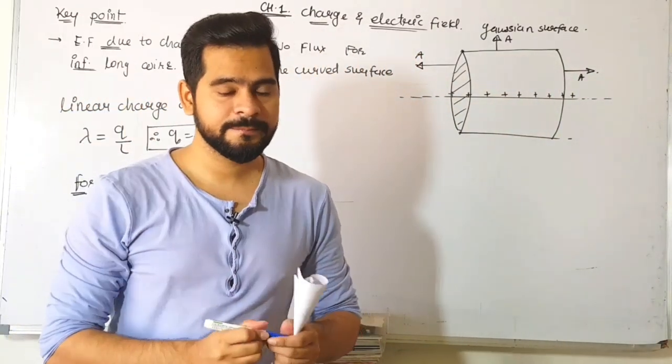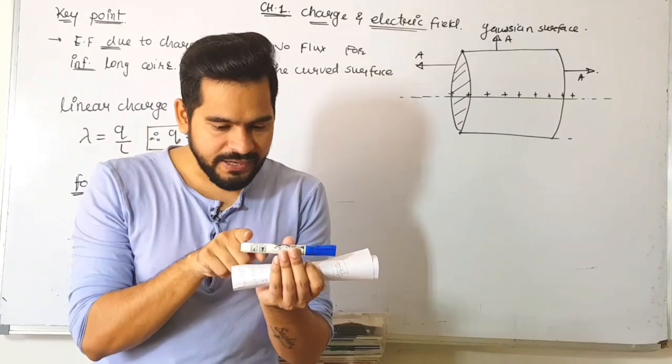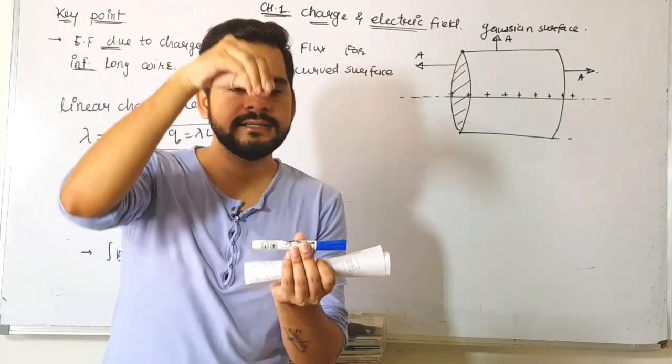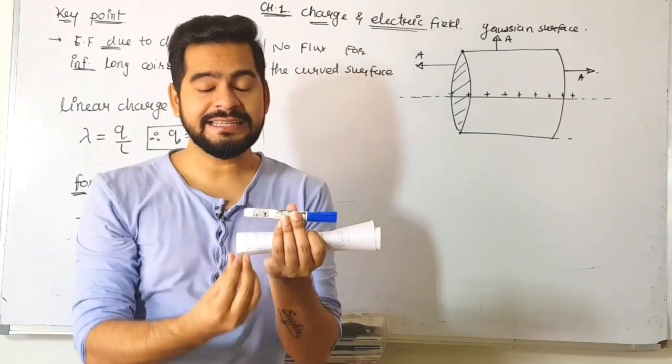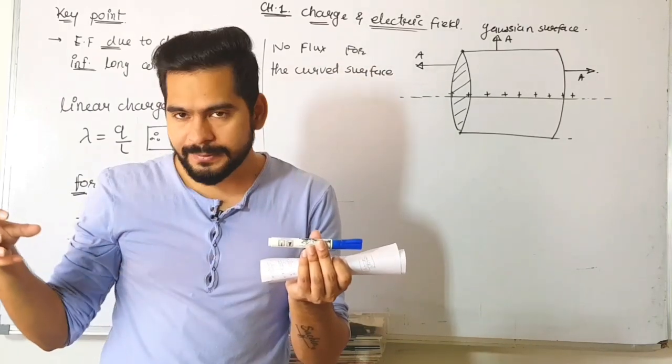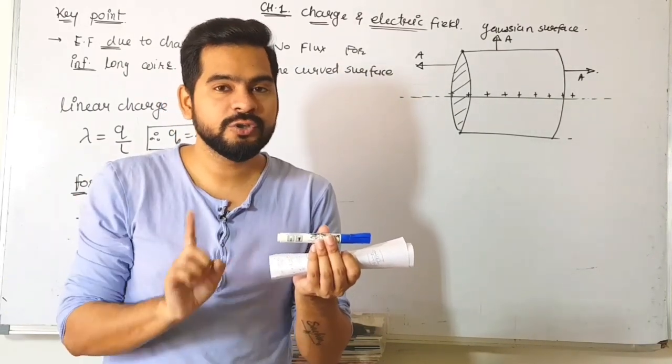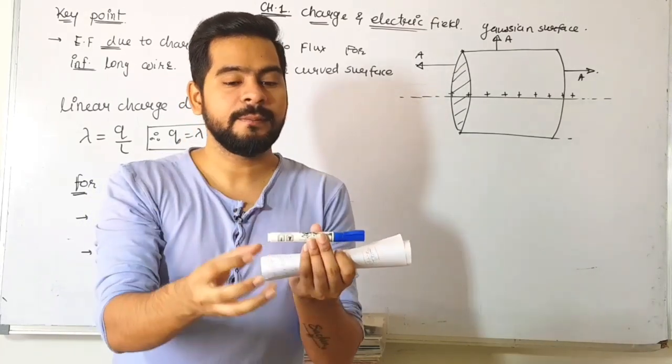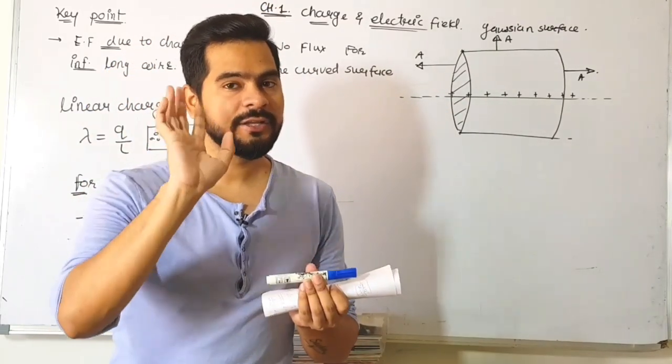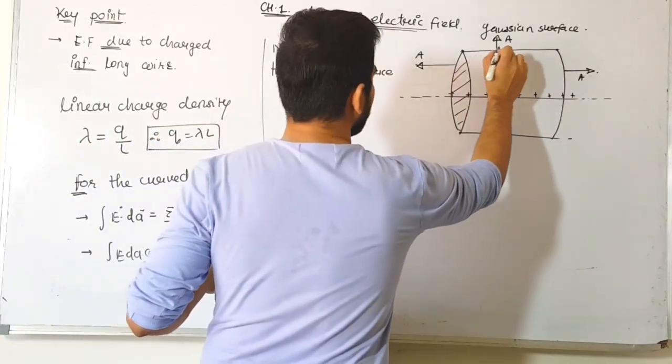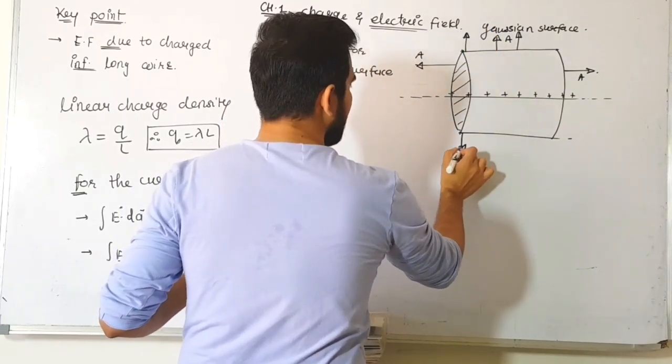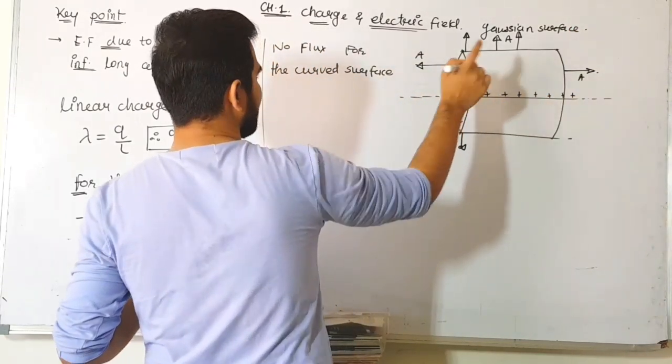Where is the direction of electric field? The charge is on the wire axis. Electric field radiates outward in all directions perpendicular to the wire—radially outward. There's no electric field along the wire direction. Electric field is perpendicular to the axis, pointing radially outward from the curved surface.